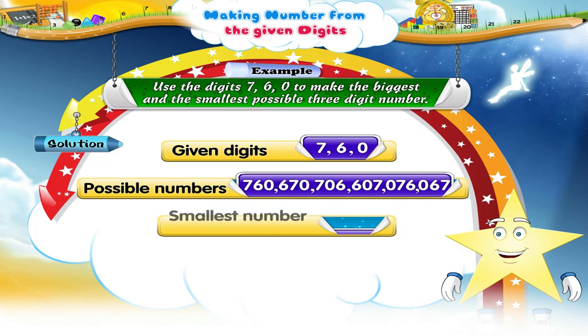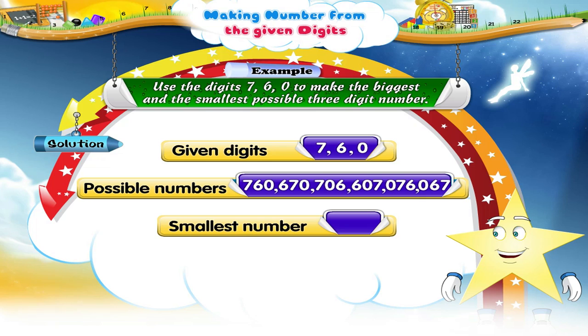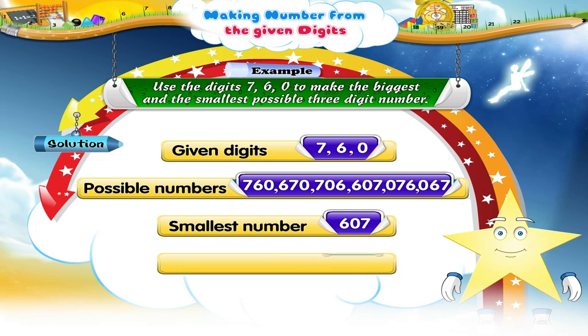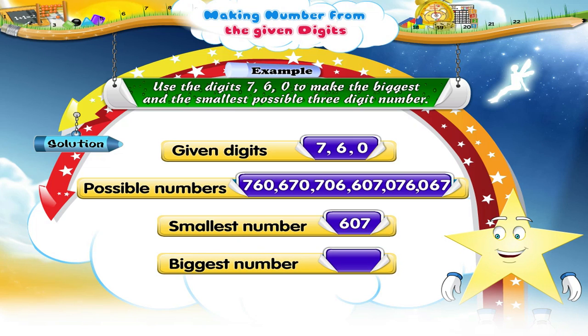So the smallest three-digit number is six hundred and seven, and the biggest three-digit number is seven hundred and sixty.